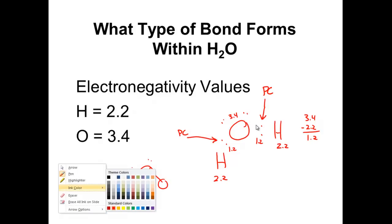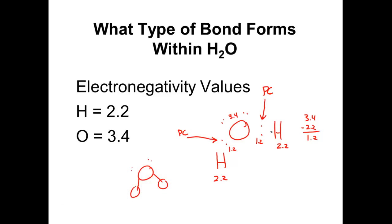Because it's a polar covalent bond, the electrons are going to move a little bit towards the more electronegative element — towards oxygen. Electrons move towards oxygen, and the back side of that arrow becomes positive. So oxygen becomes kind of negative — a little bit negative — and hydrogen becomes a little bit positive. We're using the Lewis dot structure to show and support a visual picture of polar covalent bonding.